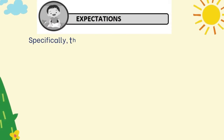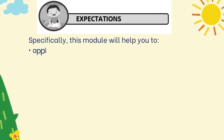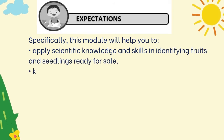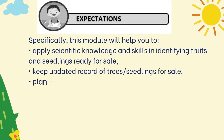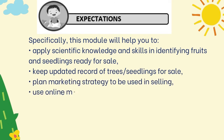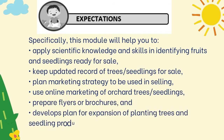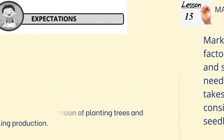Specifically, this module will help you to apply scientific knowledge and skills in identifying fruits and seedlings ready for sale, keep an updated record of trees and seedlings for sale, plan a marketing strategy to be used in selling, use online marketing of orchard trees and seedlings, prepare flyers or brochures, and develop a plan for expansion of planting trees and seedling production.